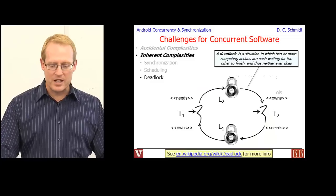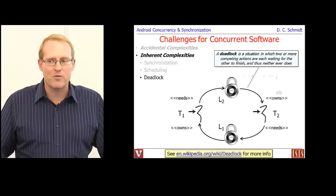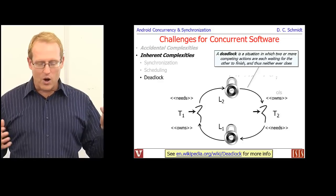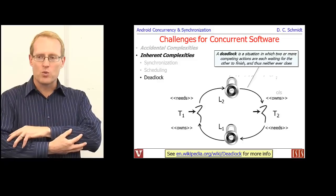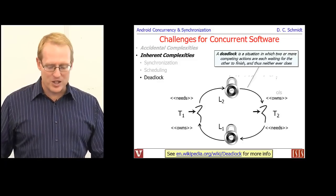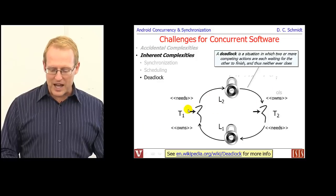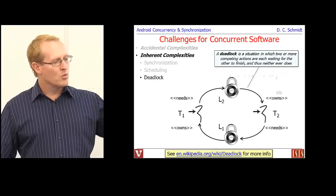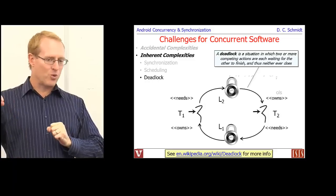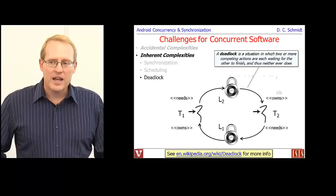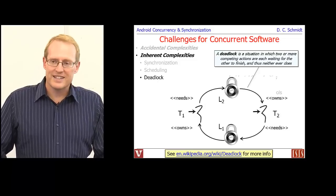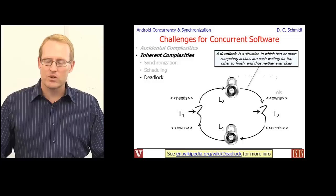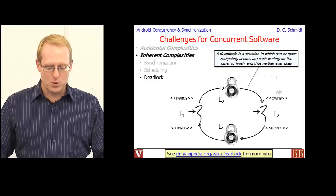Another inherent complexity is deadlock — a situation where two or more competing actions are waiting for each other to finish. It's mutual waiting or mutual dependency, so neither can get the job done. If you have two locks and two threads and acquire them in the wrong order, each thread holds one lock and waits for the other, and they deadlock. Writing deadlock-free software is rather tricky and requires patterns, algorithms, and careful thinking.